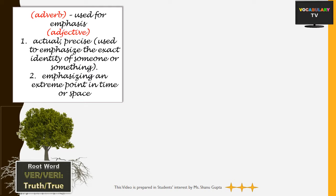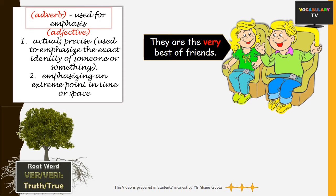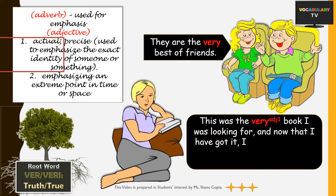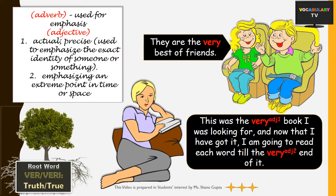If I say 'they are the very best of friends,' 'very' is an adverb here because it qualifies the adjective 'best.' However, if it qualifies a noun, it would be an adjective. For example, in this sentence — 'this was the very book I was looking for' — 'very' emphasizes the fact that this was precisely the object I was looking for. And 'I am going to read each word till the very end of it' — here, 'very' emphasizes an extreme point in time or space.